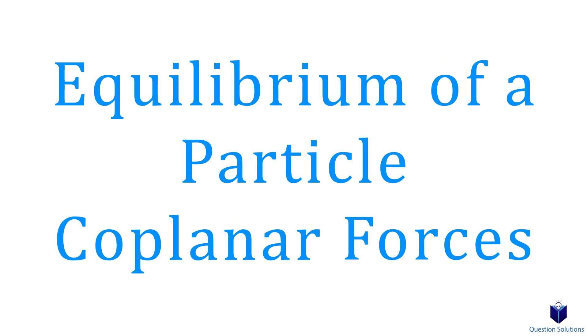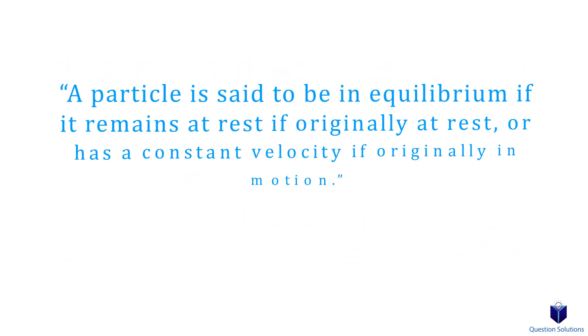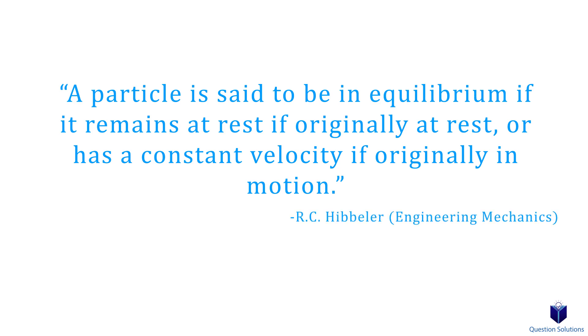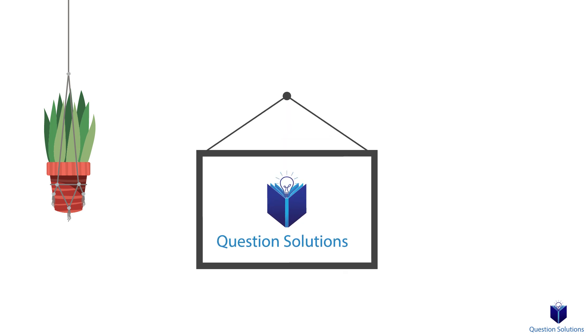Let's talk about equilibrium of a particle. In simple terms, equilibrium is used to describe an object that's not moving. For example, a flower pot hung on a ceiling, or a picture frame hung on a wall. The possibilities are endless.